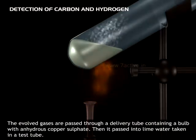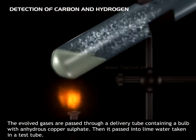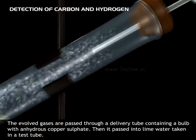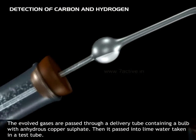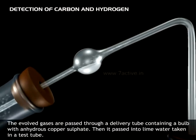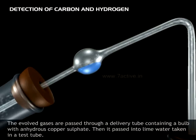The evolved gases are passed through a delivery tube containing a bulb with anhydrous copper sulfate. Then, it passed into lime water taken in a test tube.